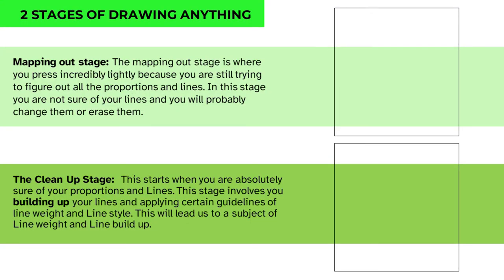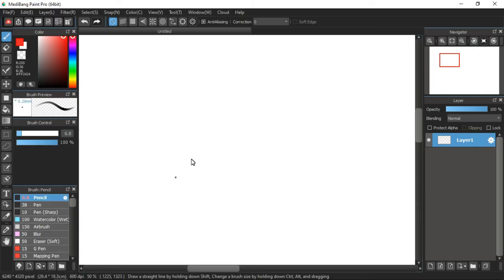The first stage of drawing anything is the mapping out stage. This is the stage where you press incredibly lightly because you are still figuring out proportions and lines. You're not sure of your lines — you'll probably change or erase them. Let's say we're trying to draw a building — let's use a cube as an example.